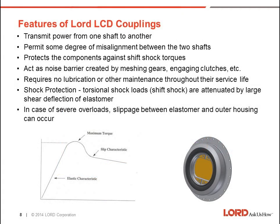Some features of the Lord LCD coupling line: they transmit power from one shaft to another, permit a degree of misalignment between the two shafts — angular, parallel, and axial — and protect components against shift shock torques so that gears are not fretted and splines are not damaged. They act as a noise barrier against meshing gears, engaging clutches, and so forth, preventing that noise from being transmitted to the engine and into the frame. LCD couplings require no lubrication or other maintenance throughout their service life, as the connection is elastomeric.